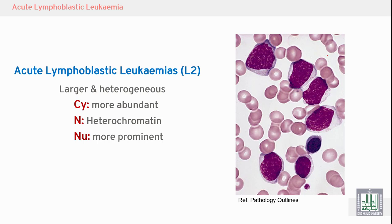L2 is different from L1 — essentially the reverse. Cells are larger and heterogeneous, differing in shape. Cytoplasm is more abundant, as you can see here. The nucleus shows condensed heterochromatin, and nucleoli are more prominent compared to L1.